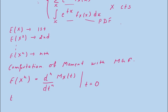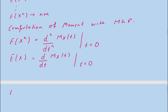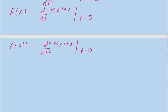To compute E[X], differentiate the moment generating function once and then plug in t = 0. Similarly, E[X²] requires differentiating the moment generating function two times and then plugging in t = 0.